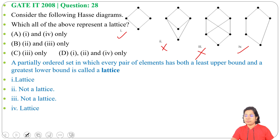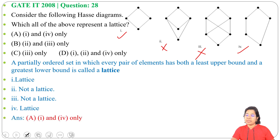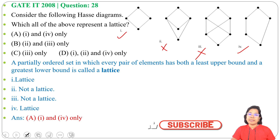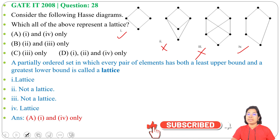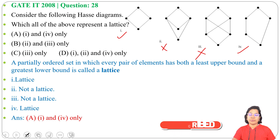So we found that the first and fourth Hasse diagrams are lattices, whereas the second and third are not. The answer is option A (one and four only). I have already discussed lattice in a previous lecture — please go through it. If this lecture was helpful, please like, share, and subscribe. Thank you.